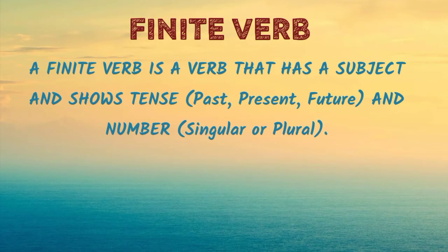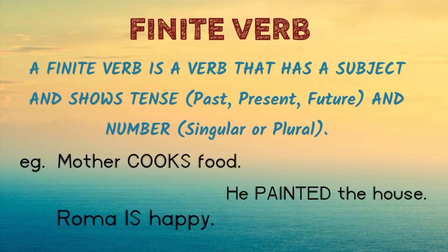Finite verb. A finite verb is a verb that has a subject and shows a tense — that is, past, present, or future — and number, that is singular or plural. Jhin verbs ke saath subject hoota hai aur jho past, present ya future tense batathe hain, unne finite verbs kehte hain. Finite verbs singular or plural number ke accordingly change ho sakte hain. For example, mother cooks food — cooks is a finite verb as it shows the present tense. He painted the house — painted is a finite verb as it shows the past tense.